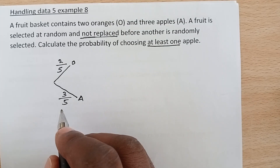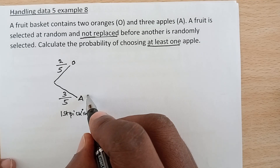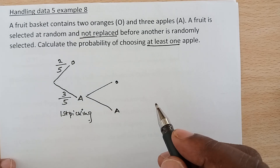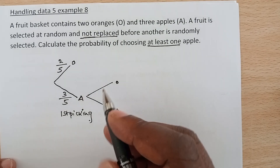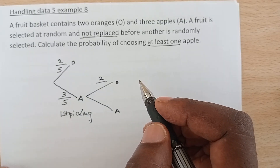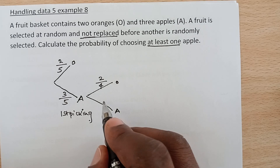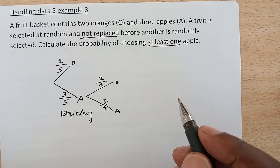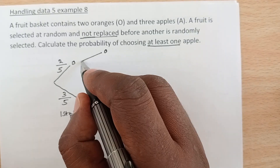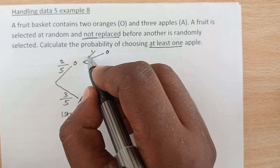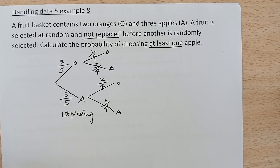That is the first picking. For the second picking, we can have an orange or again an apple. If we picked an apple first, the oranges are not interfered with — we still have two oranges — but the total is now four because we are not replacing. Apples we picked one, so now we have two out of the total four. If we first picked an orange, apples remain three but out of four.